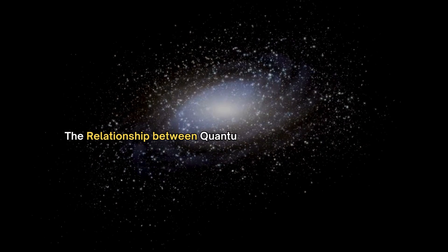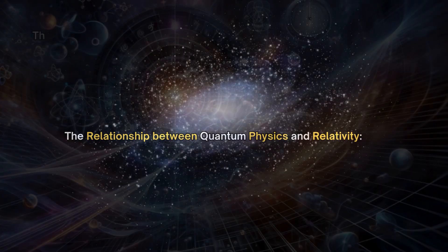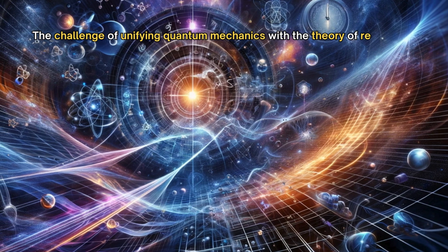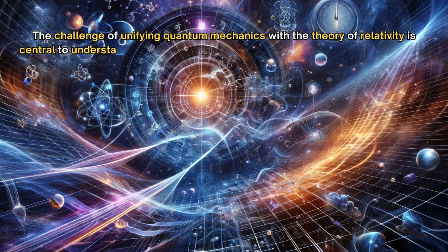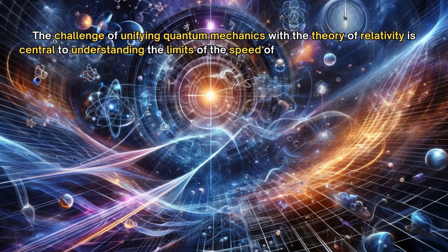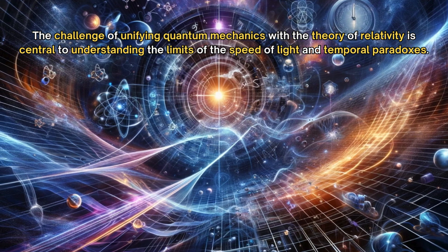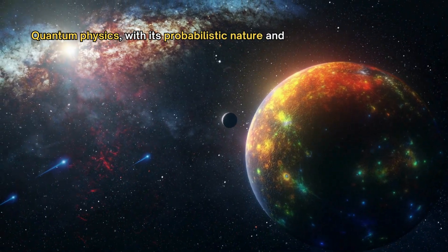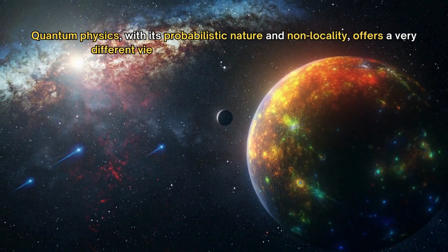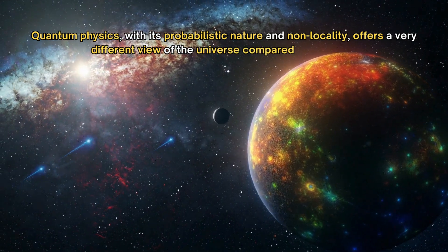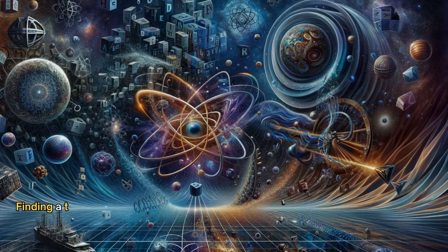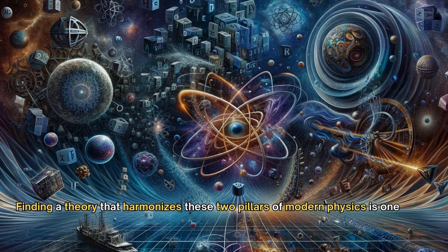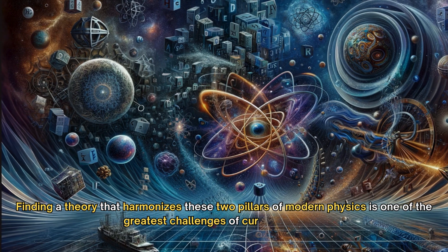The relationship between quantum physics and relativity. The challenge of unifying quantum mechanics with the theory of relativity is central to understanding the limits of the speed of light and temporal paradoxes. Quantum physics, with its probabilistic nature and non-locality, offers a very different view of the universe compared to relativity. Finding a theory that harmonizes these two pillars of modern physics is one of the greatest challenges of current science.